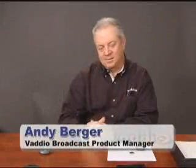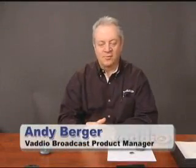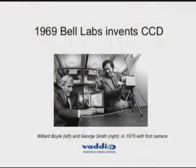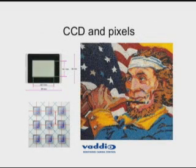Last session we talked a lot about the number of pixels and how the number of pixels impact the quality of the picture. But what is the pixel itself? Let's go back to the invention of the CCD back in 1969 by Bell Labs. They used a very small number of pixels in that first camera. Basically what we do is we cut the image into little pieces, and each one of these little squares is called a pixel.